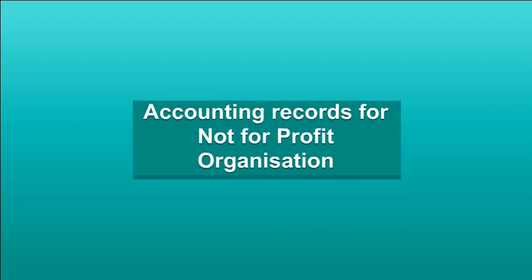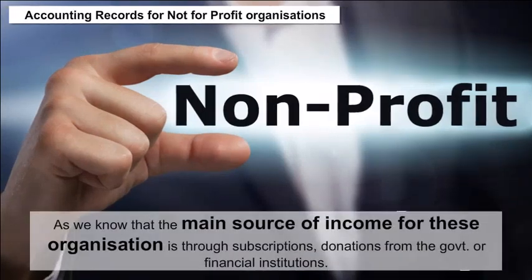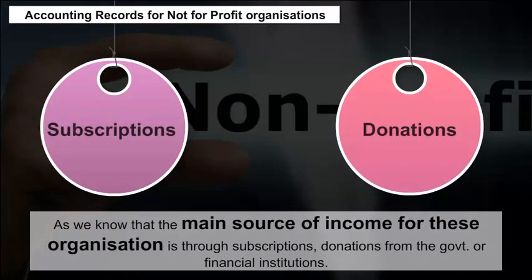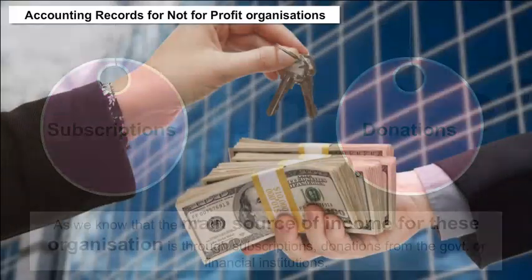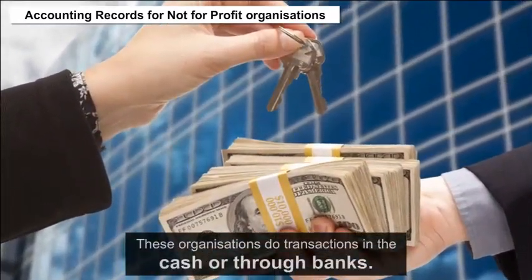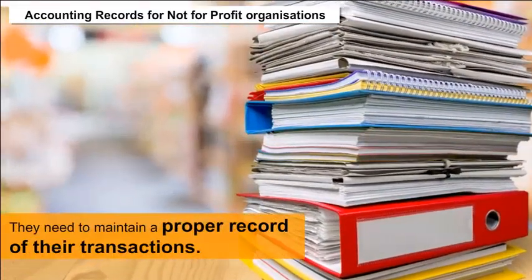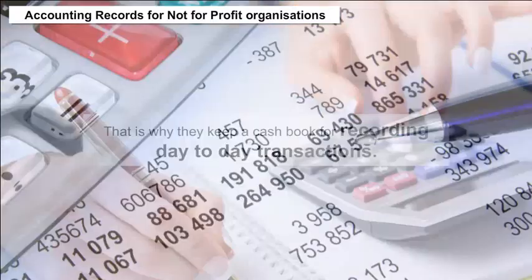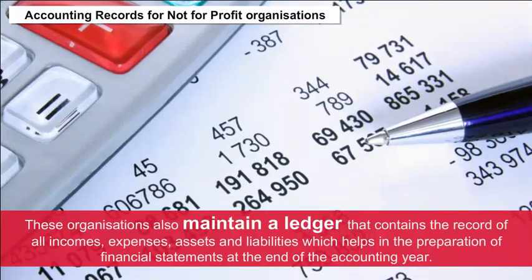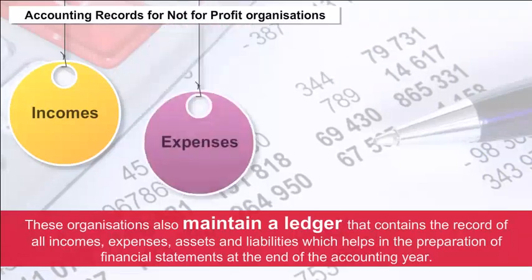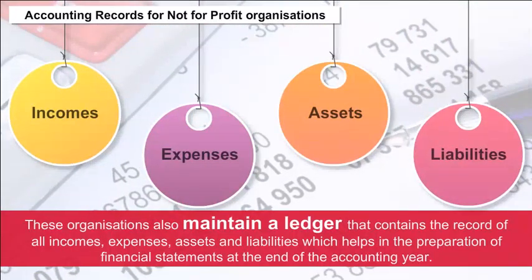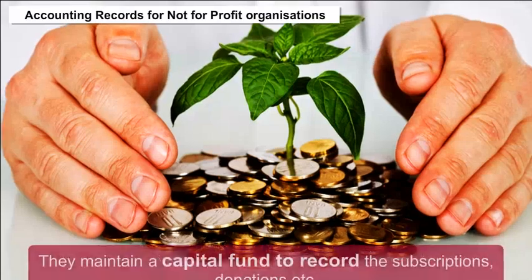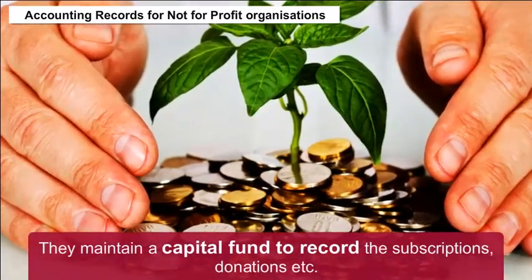Accounting records for not-for-profit organizations. The main source of income for these organizations is through subscriptions and donations from the government or financial institutions. These organizations do transactions in cash or through banks. They maintain a proper record of their transactions by keeping a cash book for day-to-day transactions. They also maintain a ledger containing records of all incomes, expenses, assets, and liabilities, which helps in the preparation of financial statements at the end of the accounting year. They maintain a capital fund to record subscriptions, donations, etc.